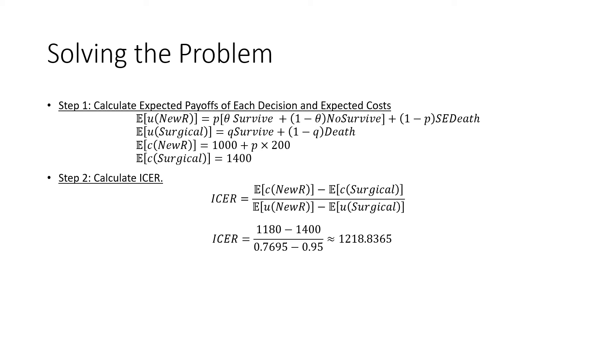We're then going to calculate our ICER, which is going to be the difference in terms of our expected costs, starting with the new treatment and our surgical treatment, all over our utility from our new treatment and our surgical treatment. We calculate that ICER and we get this number here. It's a repeating decimal that is $1,218.8365 dollars per QALY.